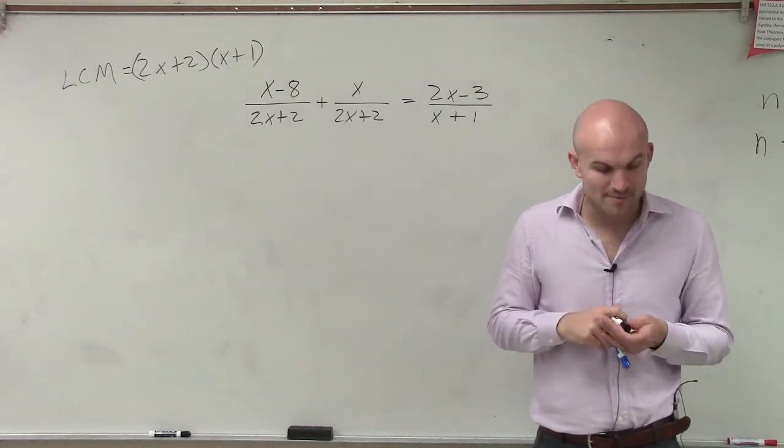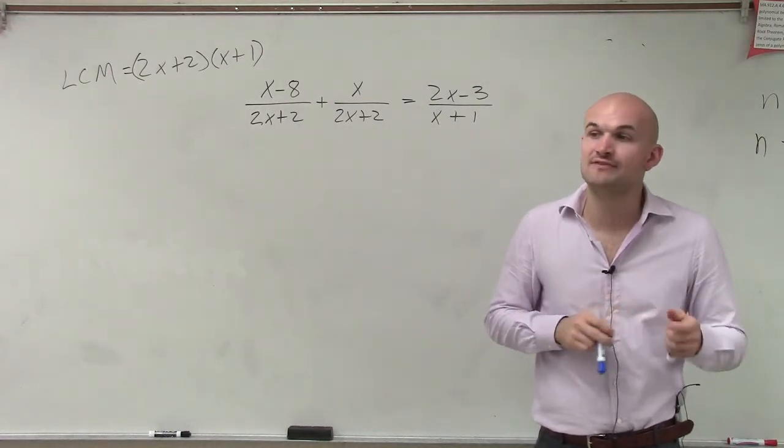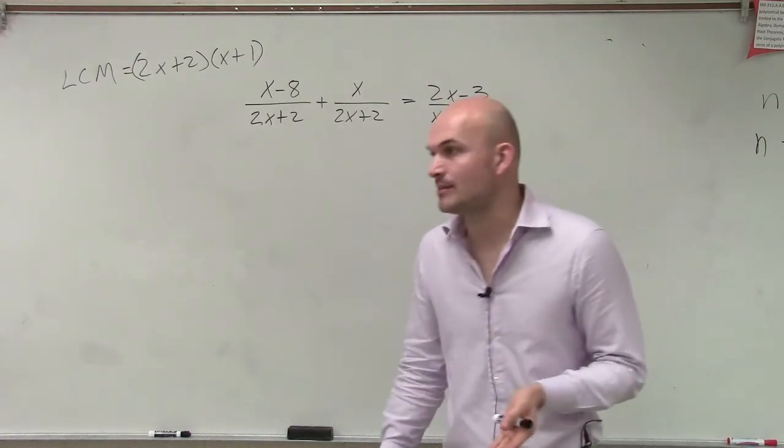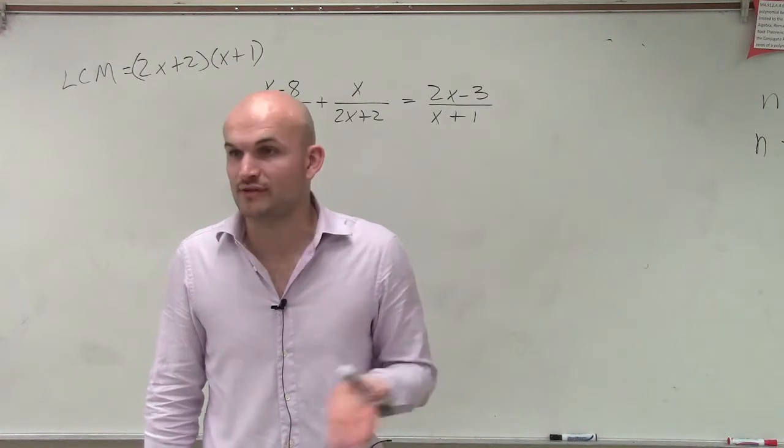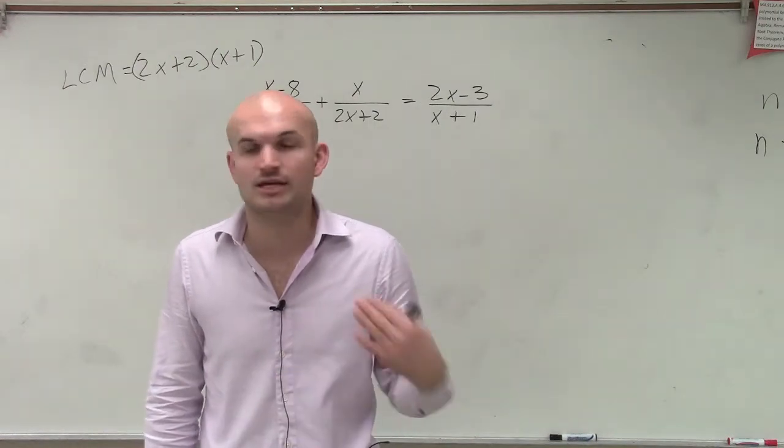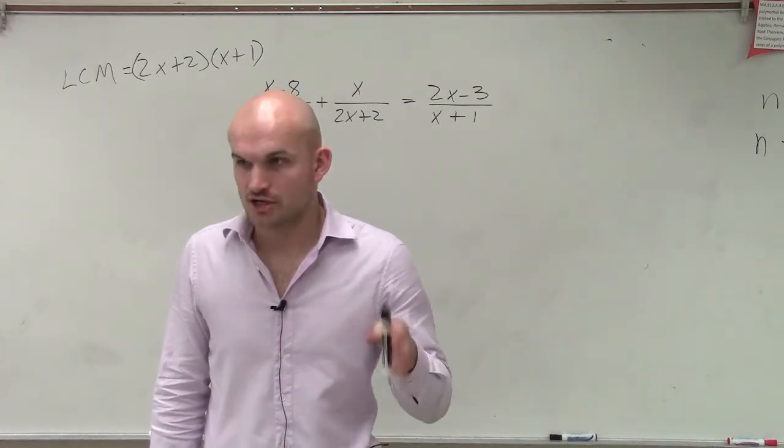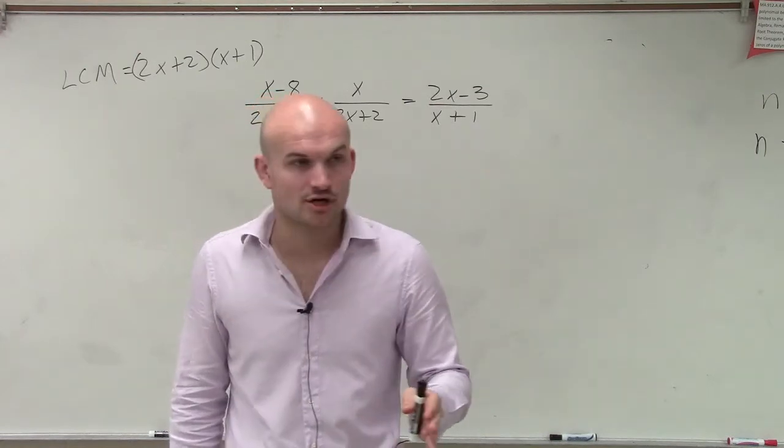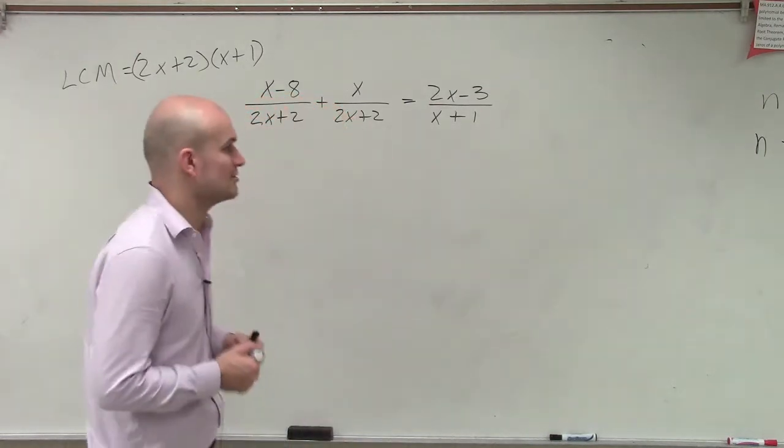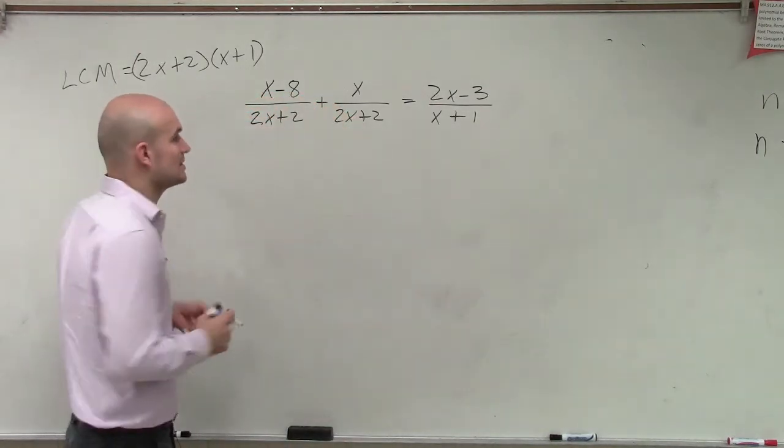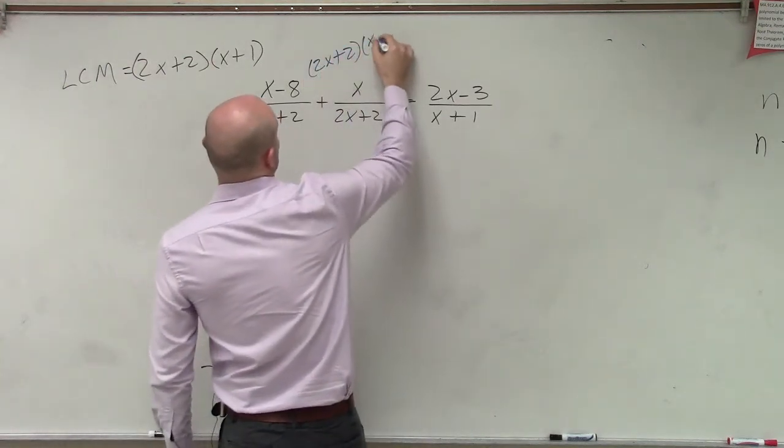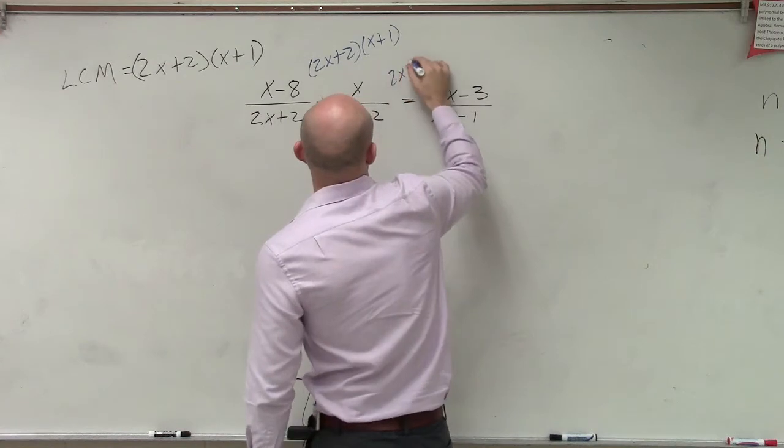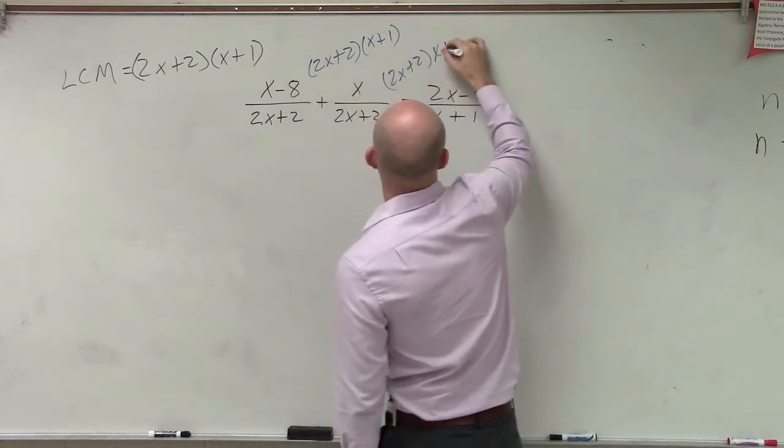So now, to get rid of my rational expressions, I'm going to multiply every single term by my LCM. That's okay, as long as I multiply every single term, I'm going to keep equivalent equations. As long as you multiply everything by the same term, you'll keep equivalent equations. So we're not changing the answer. So I'll multiply everything by 2x plus 2 times x plus 1.